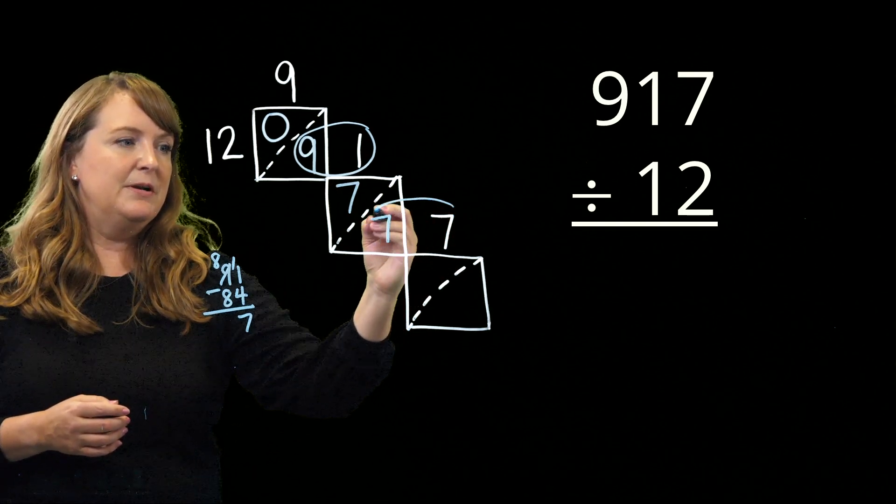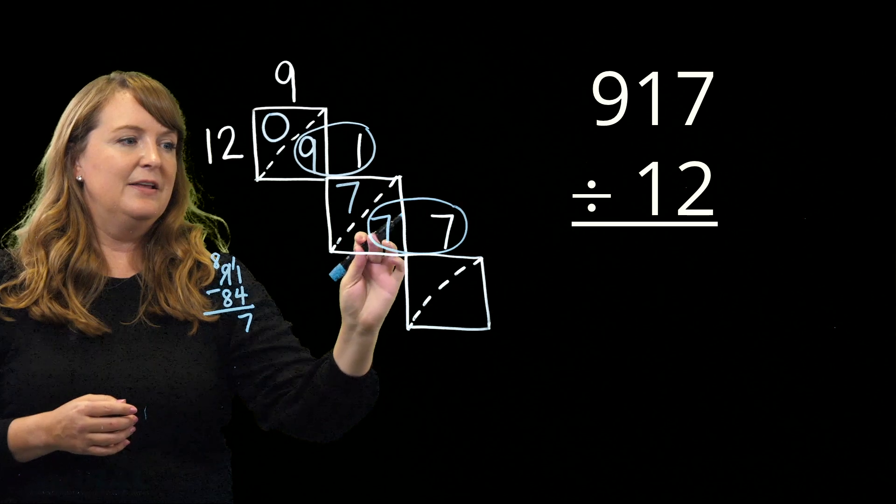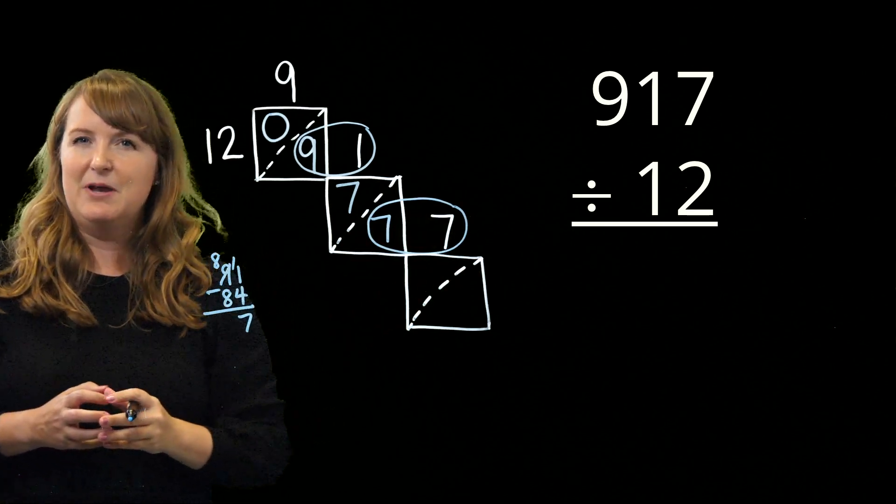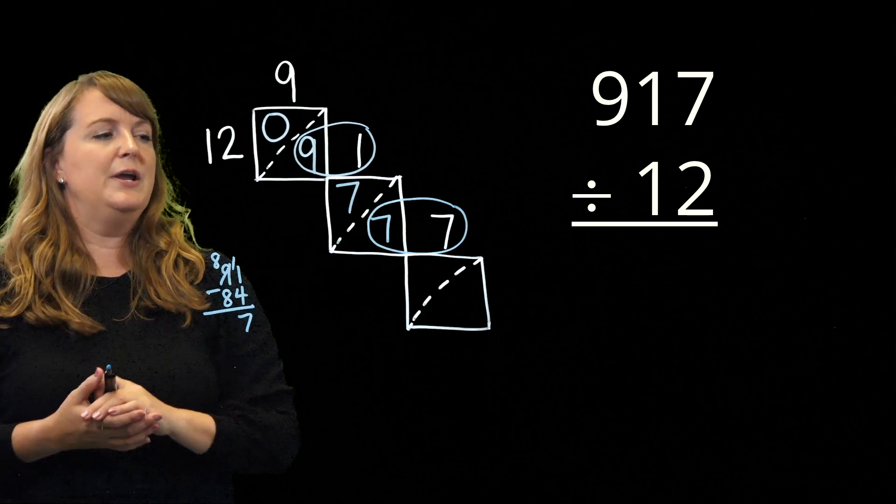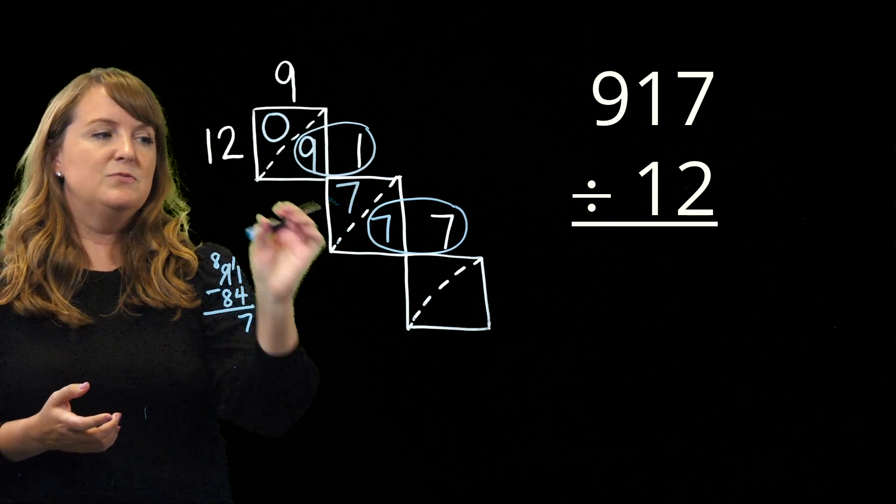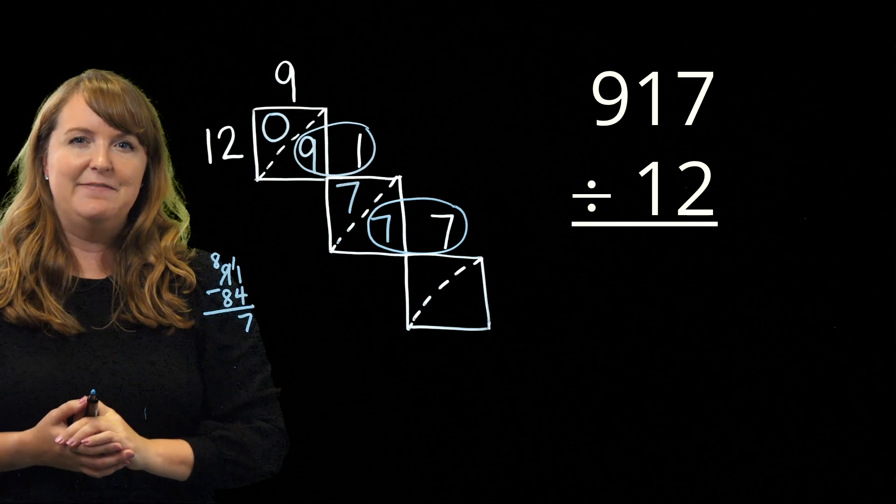I'm going to make a circle here. I'm going to combine the 7 that we had remaining with our 7 that we already had written on the third square. How many groups of 12 can I make if I have 77?